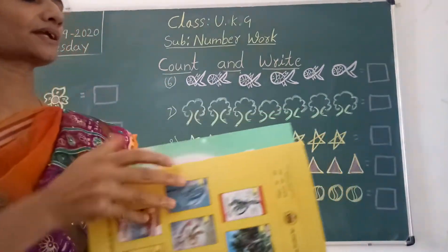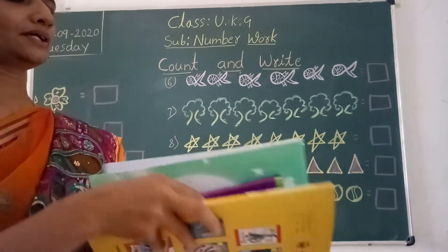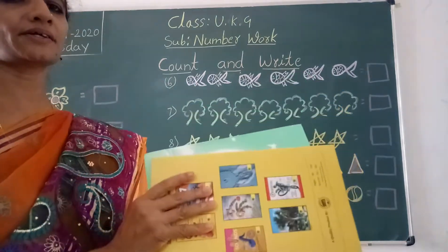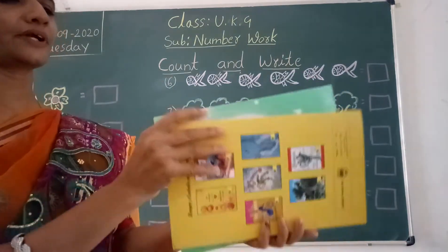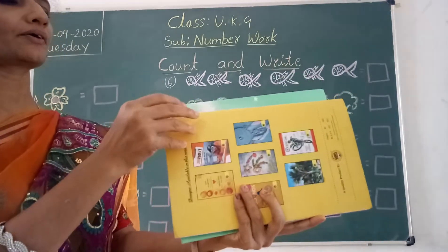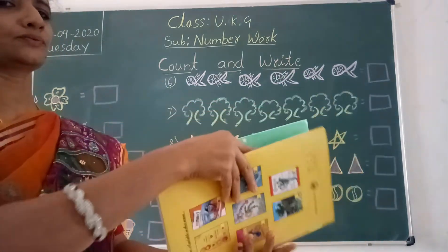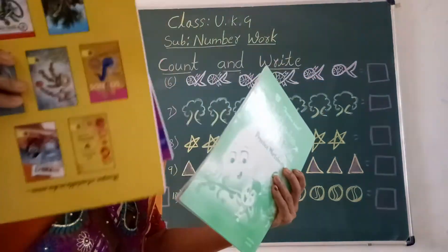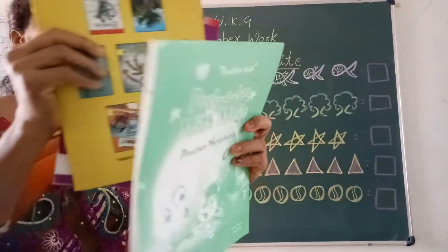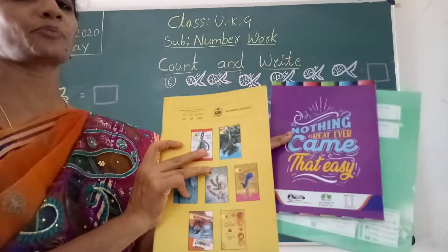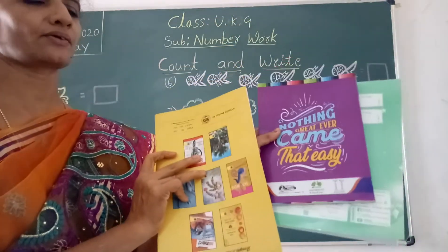See children, how many books are there here? We will count: 1, 2, 3. How many? 3 books are there.